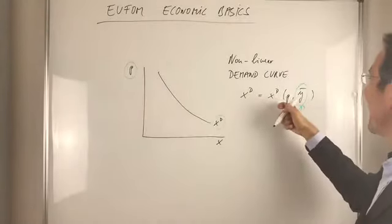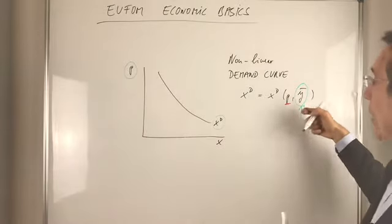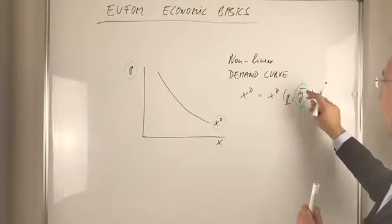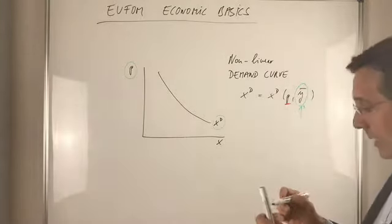The demand curve depends on the price but also on income. However, income is given. So the Y upper bar says well the income is given.